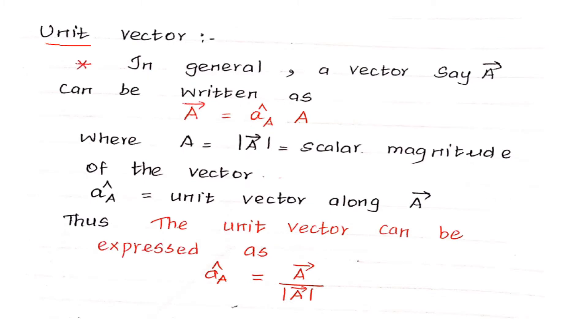Next, we are going to see unit vector. Unit vector is the main in the electromagnetic theory. In general, a vector A. How we can write the vector A? That is equal to unit vector into the magnitude of vector A. The magnitude of vector A is otherwise known as scalar. What is a scalar magnitude of the vector? What is a unit vector along the direction A? That is very important. Unit vector that is along the vector A.